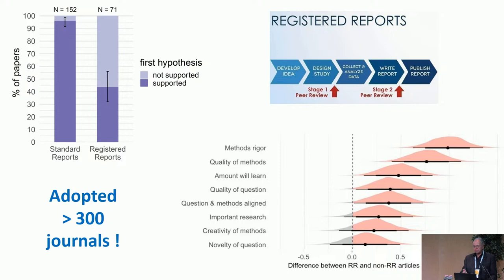My prediction is that registered reports will take off, specifically when funders come on board — and some funders are already doing that. They're saying: you can get your grant to do this study, but on one condition — you do a registered report first. You get six months and a small portion of your budget to complete it, and only when that is done do you get the rest of the subsidy. That's so clever. This is the future.